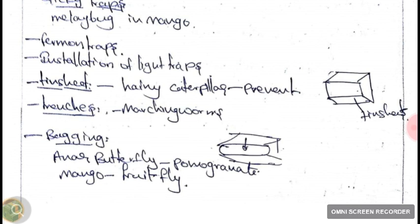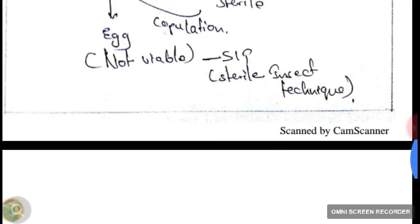Next one is bagging. Bagging is a technique used to prevent the infestation of Anna butterfly in pomegranate and fruit fly in mango. It can be used for any fruit, but it is mostly employed in pomegranate and mango because it is economically feasible there. Bagging is expensive, so it is used for high-value fruits. It cannot be used for fruits like guava, which are sold at a lower price.